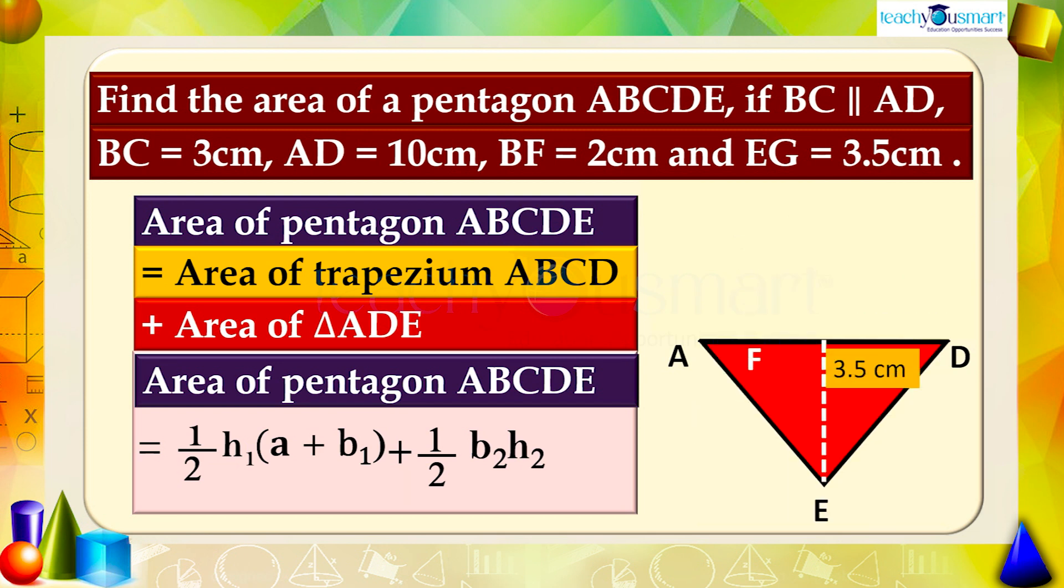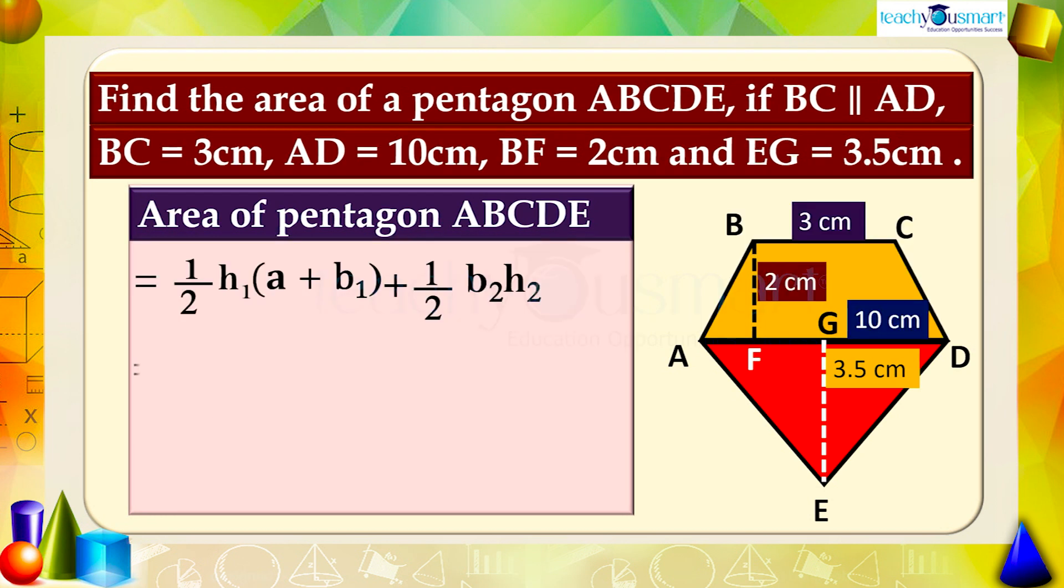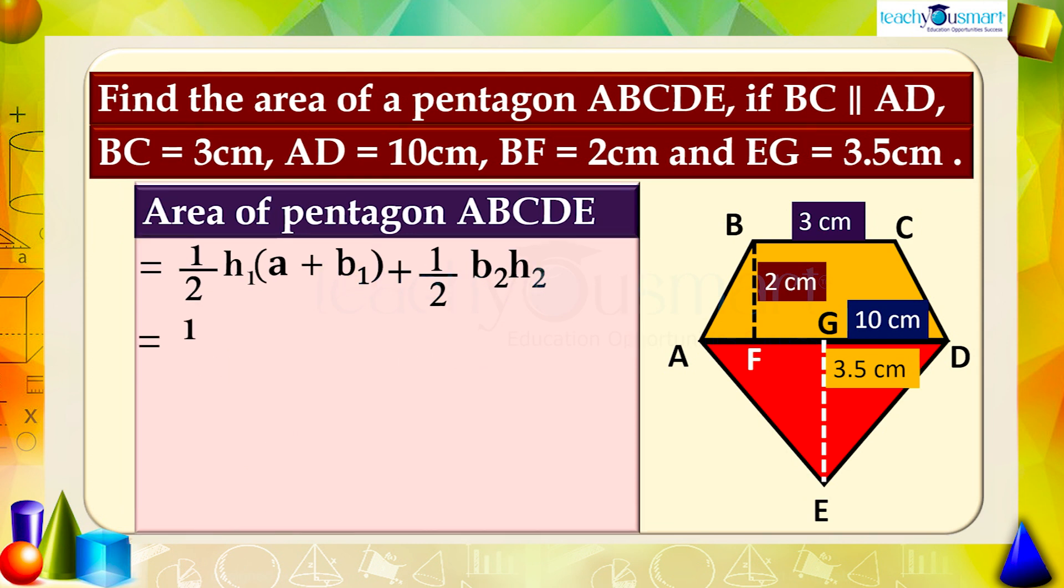Equals one-half times BF times (BC + AD) plus one-half times AD times EG. Equals one-half times 2 times (3 + 10) plus one-half times 10 times 3.5. Equals 13 plus 5 times 3.5, equals 13 plus 17.5, equals 30.5 square centimeters.